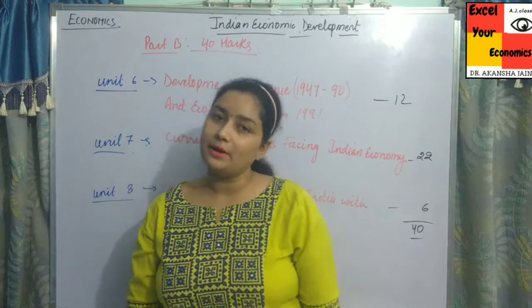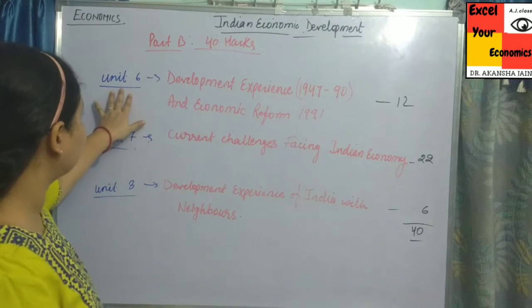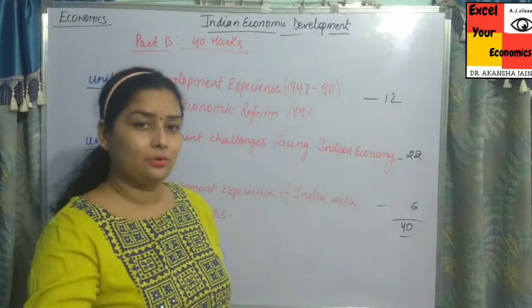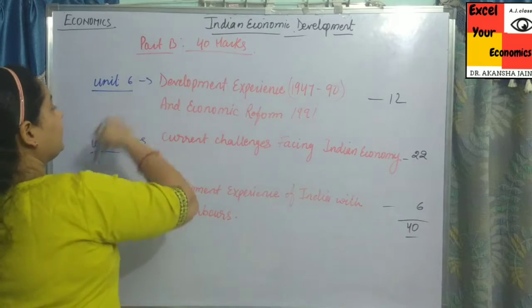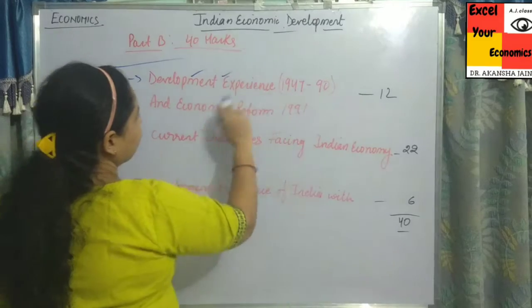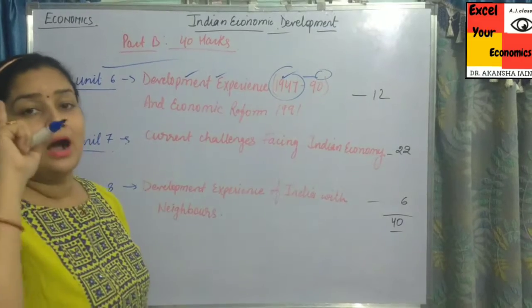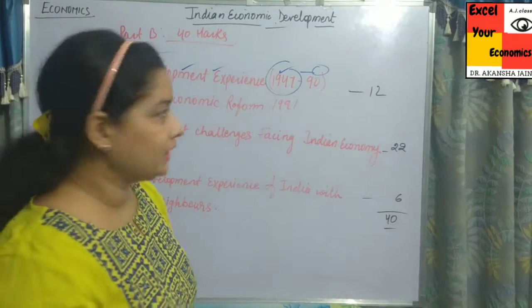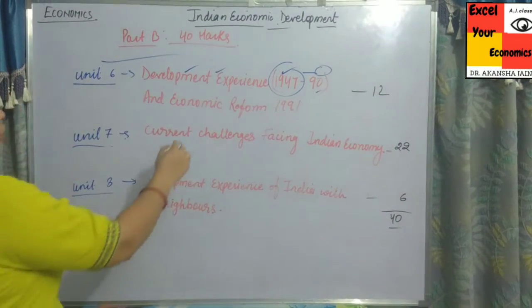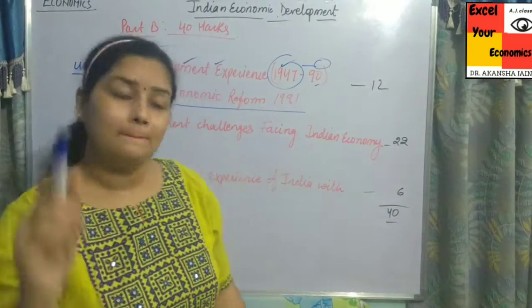Indian economics is covered across three units. Unit 6 covers development experience from 1947 to 1990 — starting with Indian economy on the eve of independence (Chapter 1), then the 1950–1990 planning period, and then the economic reforms of 1991 which transformed India from underdeveloped to developing. Macro covered the first five units, and Indian economics is Part B.